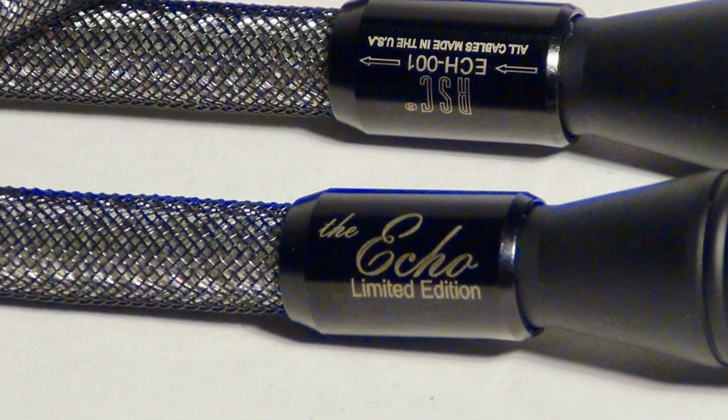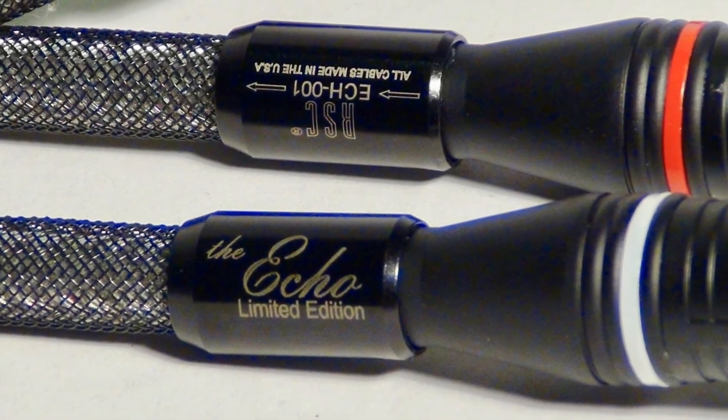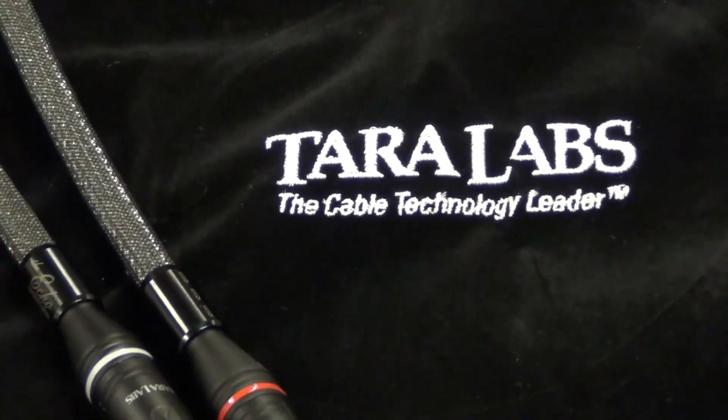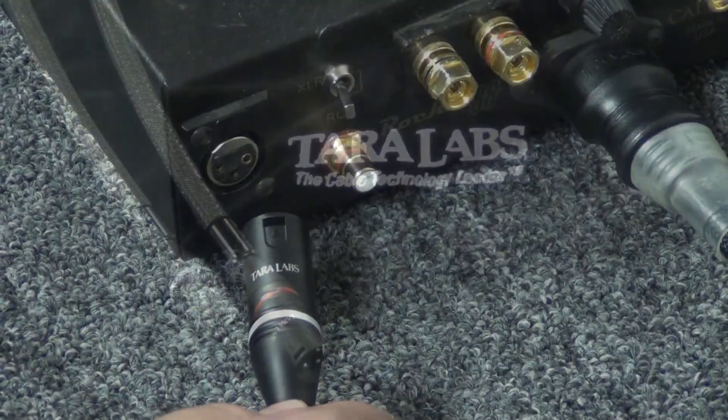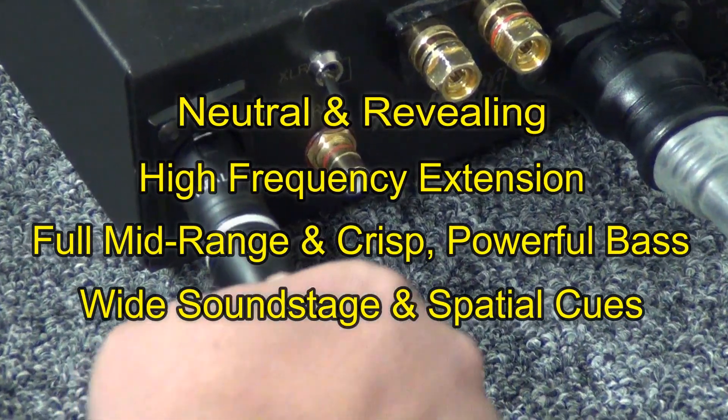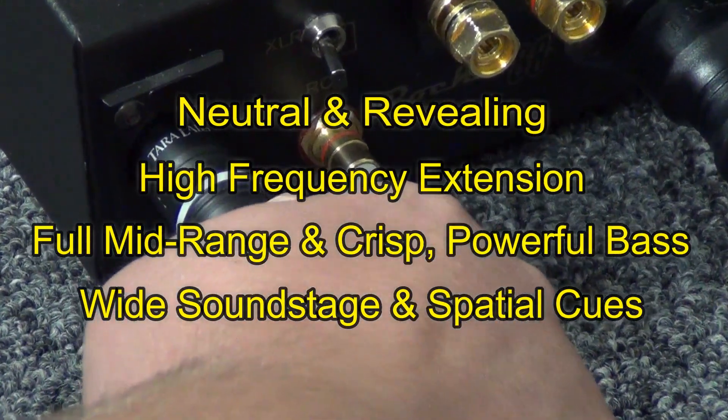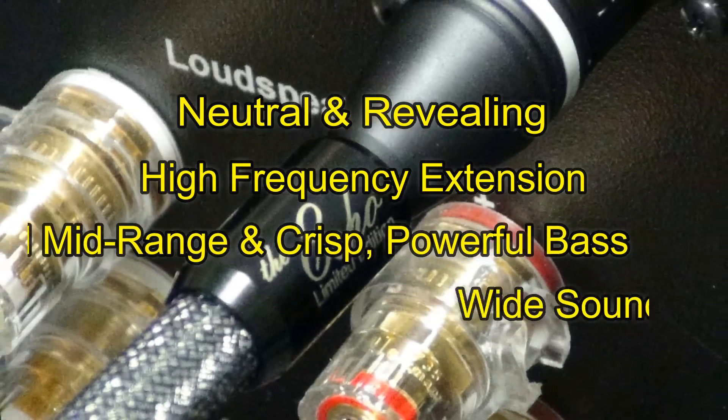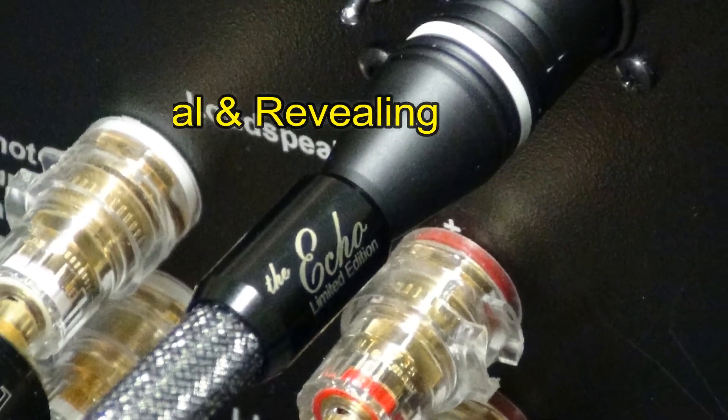Using cutting-edge air tube technology developed by Tara Labs, the ECHO LE offers a sound that is completely neutral and absolutely revealing with its ability to reveal high frequency extensions, transparency, as well as fine resolution of instrument details.